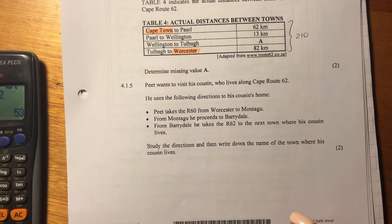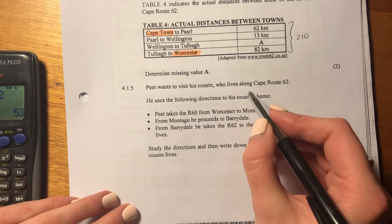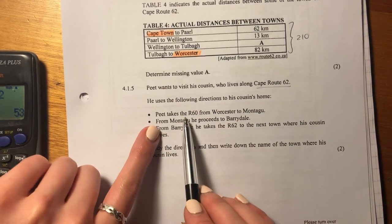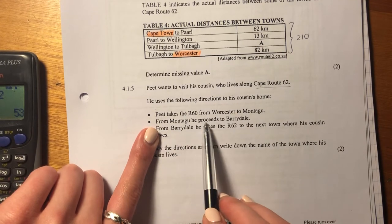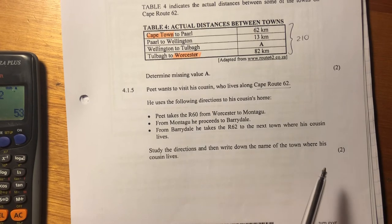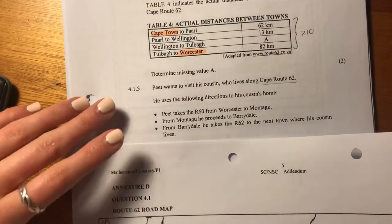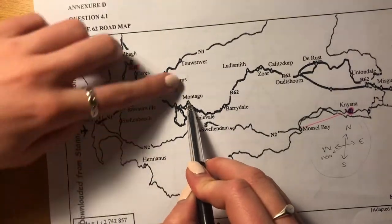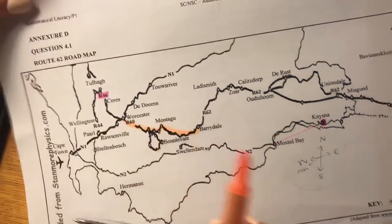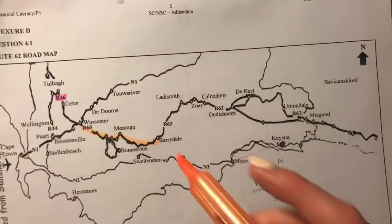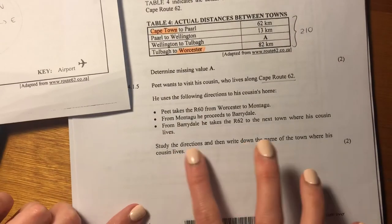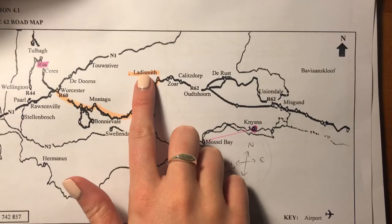Now for question 4.1.5. Pete wants to visit his cousin who lives along Cape Route 62. He uses the following directions: he takes the R60 from Worcester to Montague, then proceeds to Barrydale, and from Barrydale he takes the R62 to the next town where his cousin lives. Following the route on the map — Worcester to Montague, then to Barrydale, then along the R62 — the next town is Ladysmith. So his cousin lives in Ladysmith.